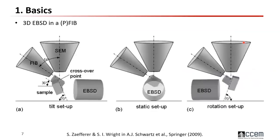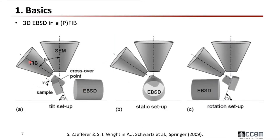3D EBSD in the FIB has been developed for a long time — the first paper, if I remember, was published in 2004. Here is an illustration of how different configurations work with respect to the relative position between your FIB column and the EBSD camera. You have three configurations. In the tilt setup, you have one cross section parallel to the milling position and another cross section tilted to 70 degrees for EBSD. For the tilt setup, you tilt between these two positions and may need to adjust X and Y to keep your region of interest in view.